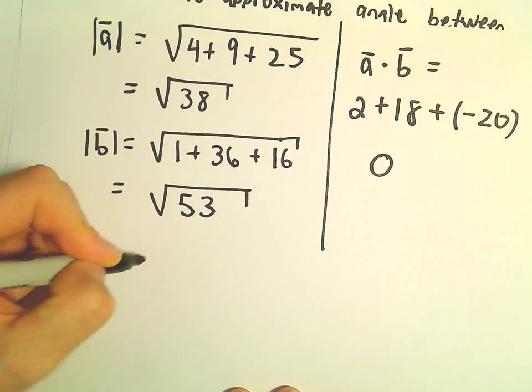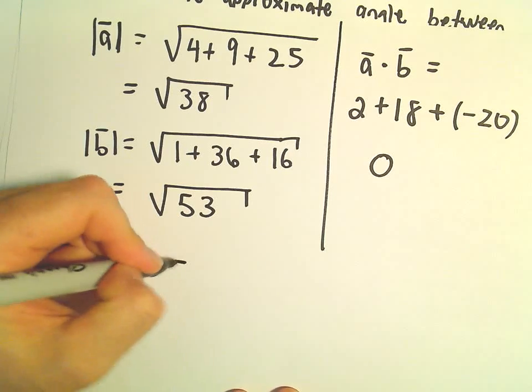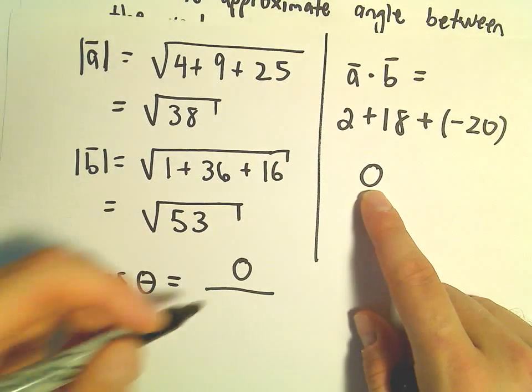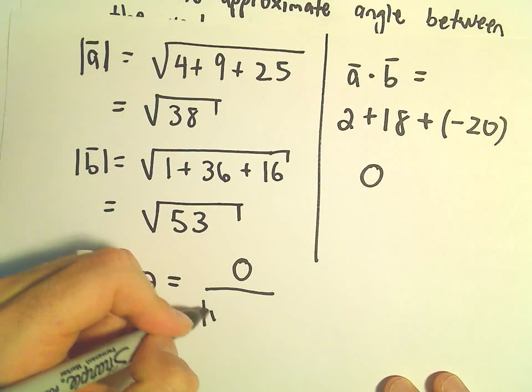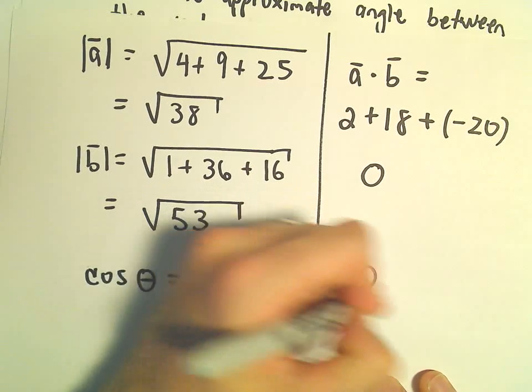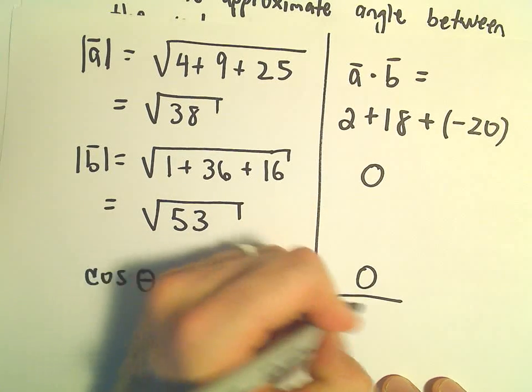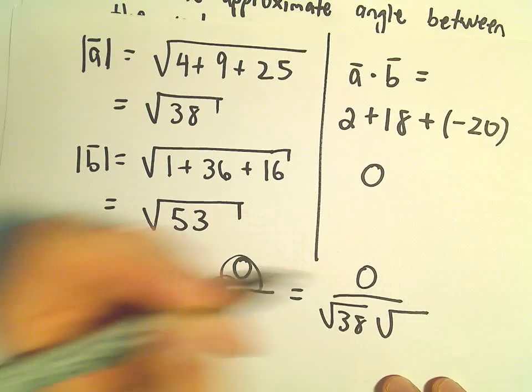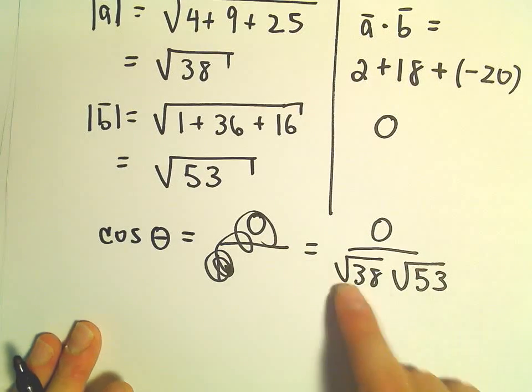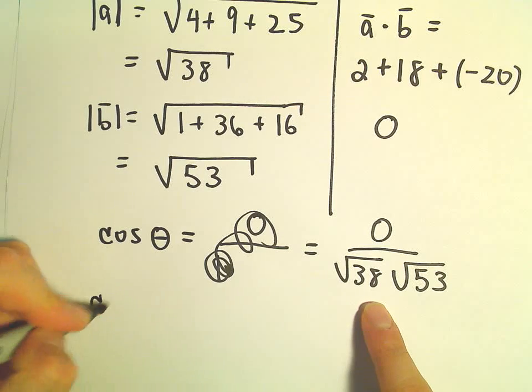Alright, so now we have cosine of theta equals the dot product, A dot B, which is 0, over the magnitude of A. So it's the dot product over the magnitude of A, which is the square root of 38, times the magnitude of B, which is the square root of 53. But who really cares, because 0 over anything is going to be 0.